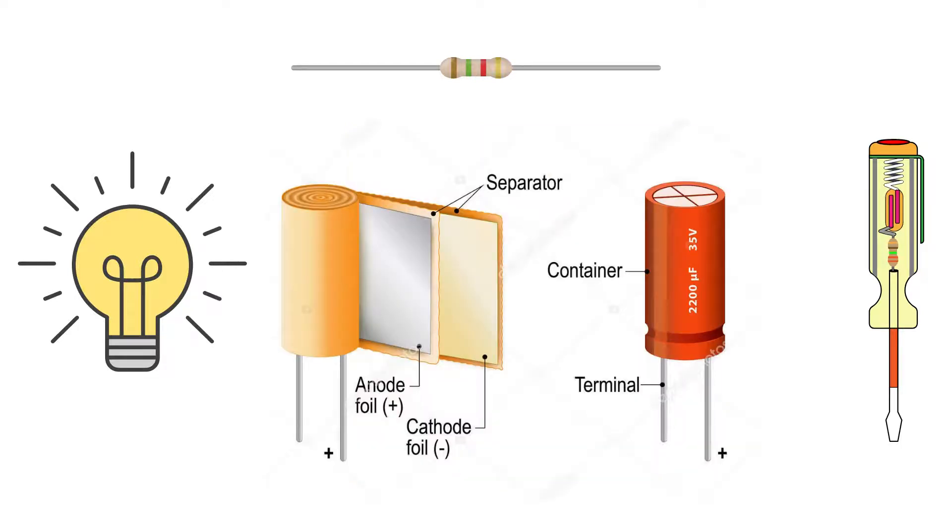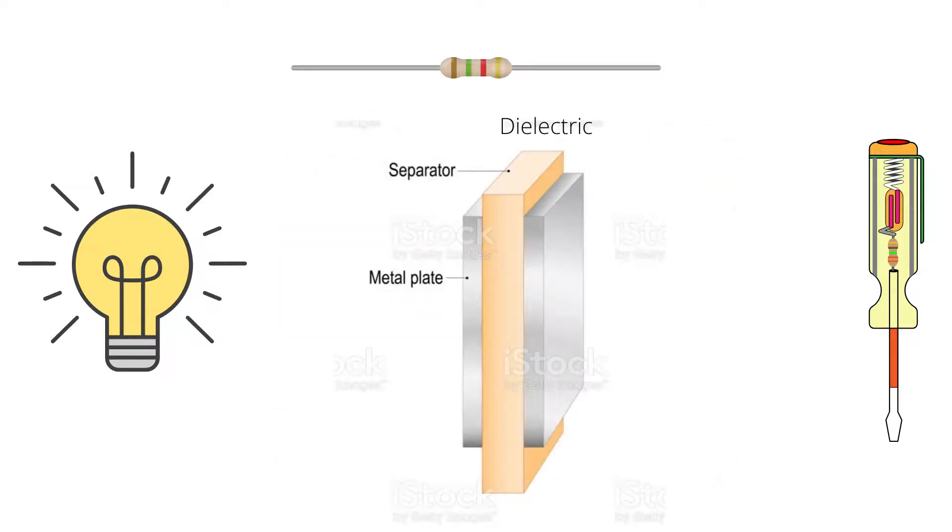Inside a capacitor, there are two conductive metal plates and these are separated by dielectric insulating materials. Dielectric means the materials will polarize when in contact with an electric field.